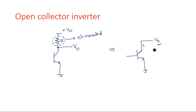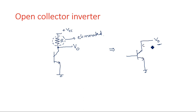The meaning of open collector is that the collector terminal is open circuited. Previously, in a totem pole configuration, we have two transistors and one diode. In the open collector configuration, we have eliminated one transistor and one diode from the totem pole, keeping only the bottom transistor. This has been explained in the previous TTL NAND gate video.